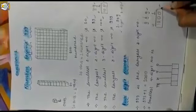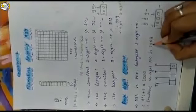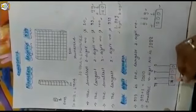1000 is the smallest 4-digit number. Let's put it on an abacus. The place values are ones, tens, hundreds, and thousands. Here we have 0 ones, 0 tens, 0 hundreds, and 1 thousand. So only 1 bead will come in the thousands place.